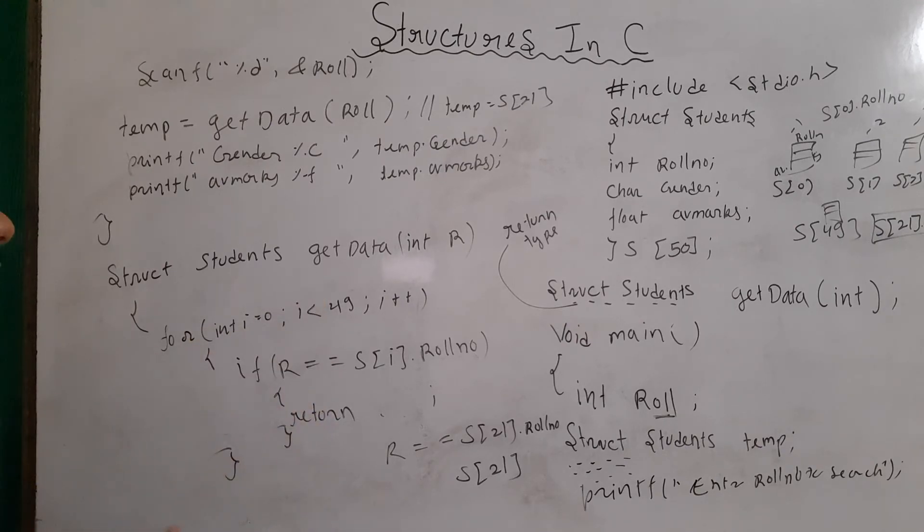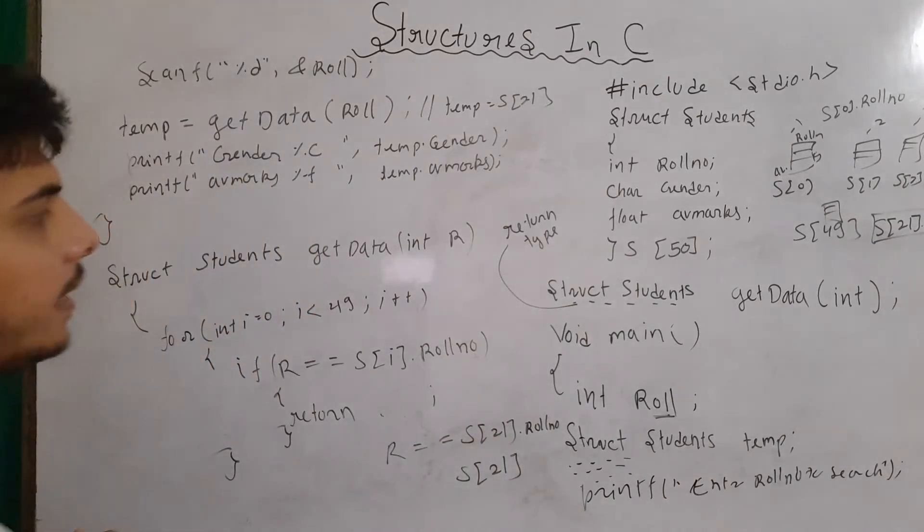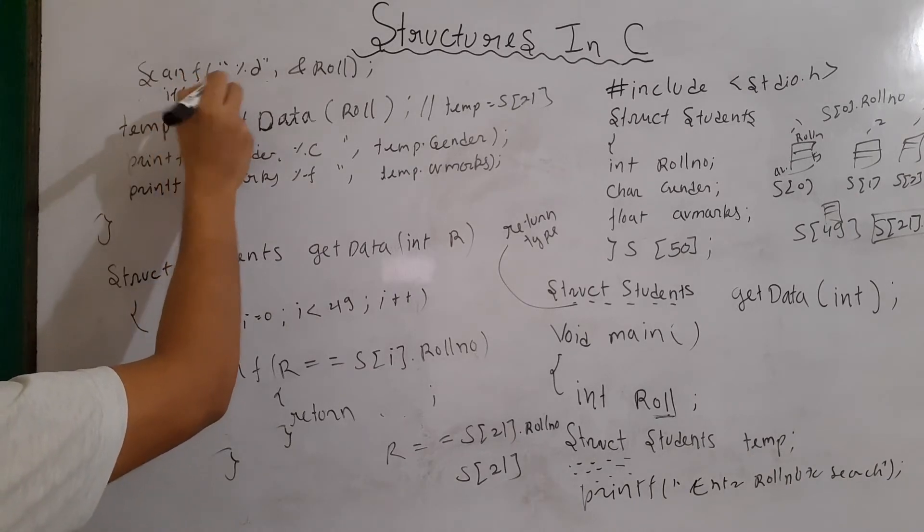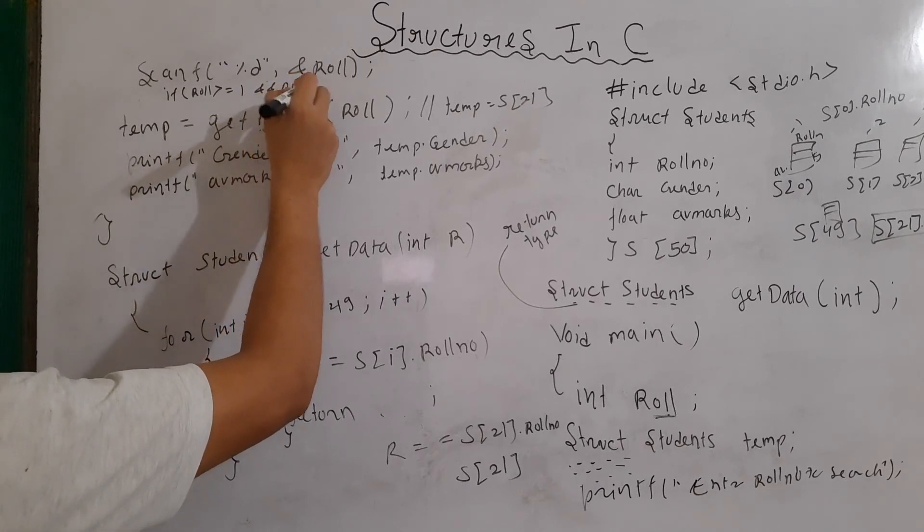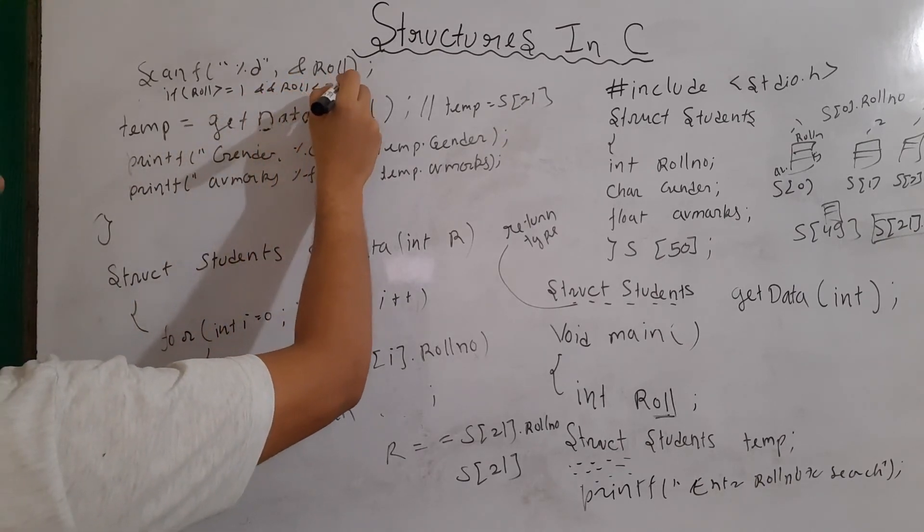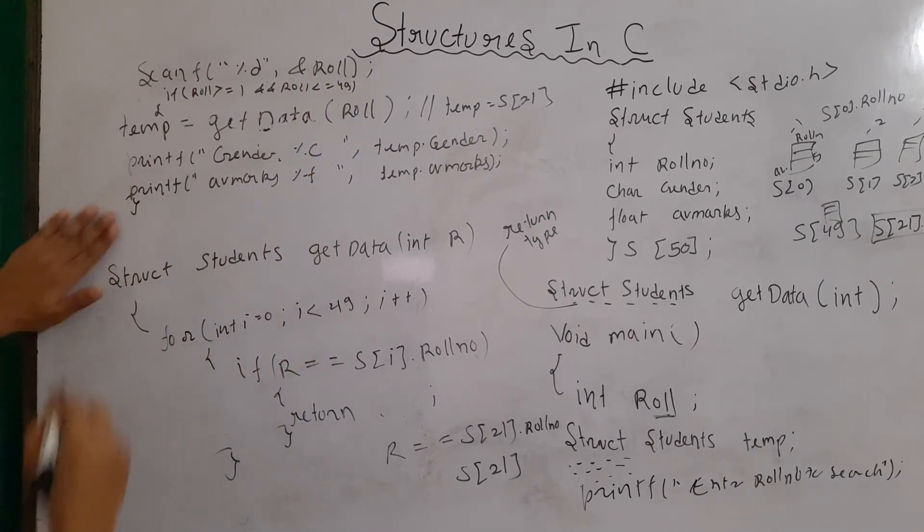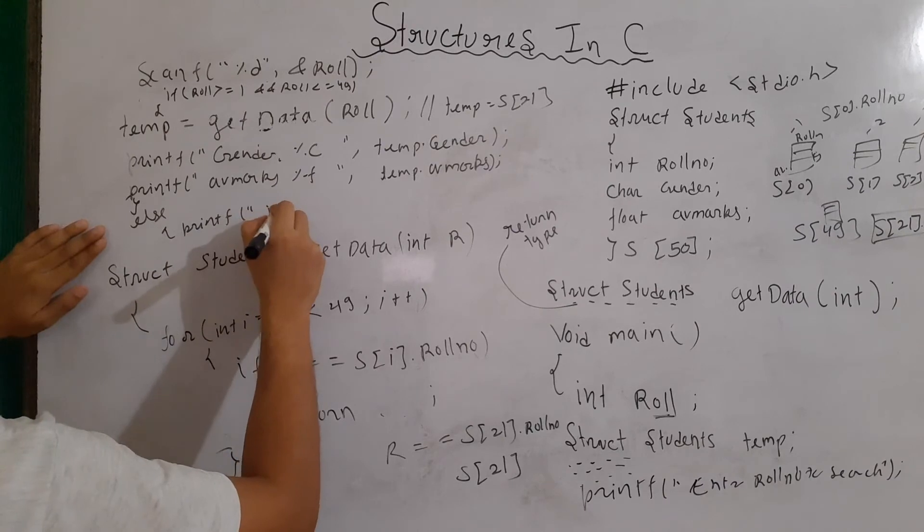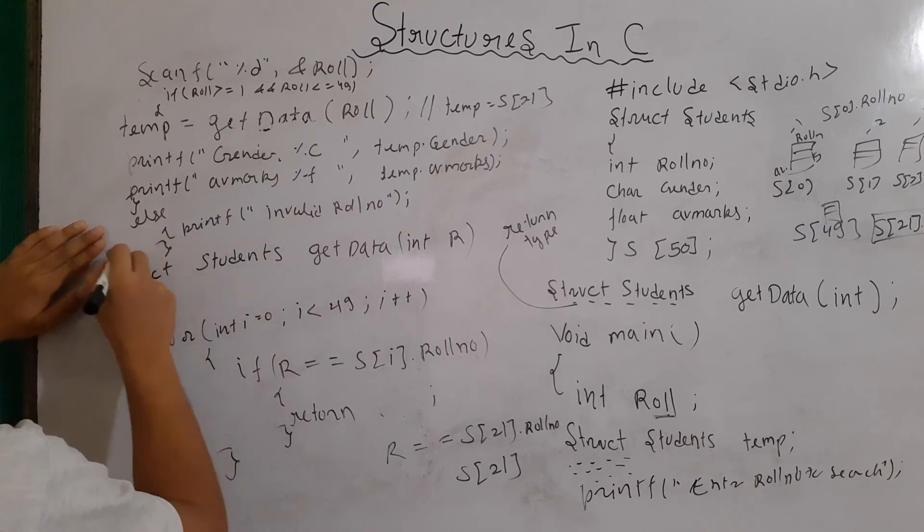Now, one thing in this program that you can ask is let's say the roll number is too high. Someone deliberately sends a very high roll number that actually does not exist. So, what should happen in that case? Now, you can write any condition here that if roll greater than or equals to 1 and then roll smaller than or equals to 49. When this condition will be satisfied only then do this. Else, you can write printf and then write invalid roll number. And that will be all.